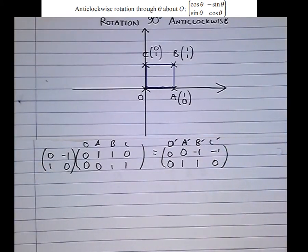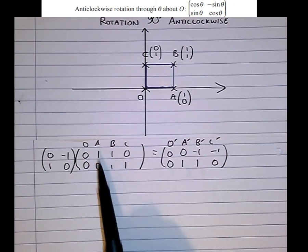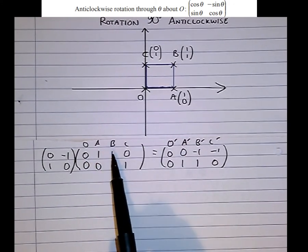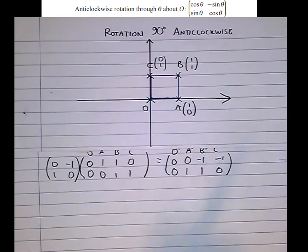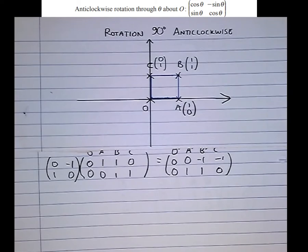Okay, so 0, 0 goes to 0, 0. 1, 0 goes to 0, 1. 1, 1 goes to minus 1, 1. And 0, 1 goes to minus 1, 0. Let's illustrate that on this unit square.